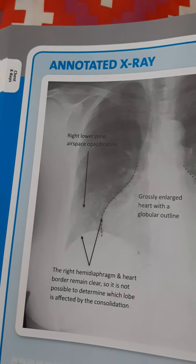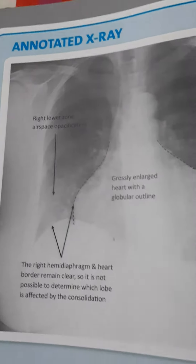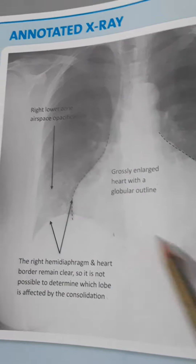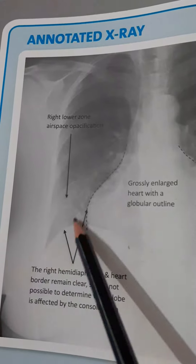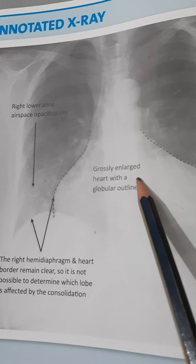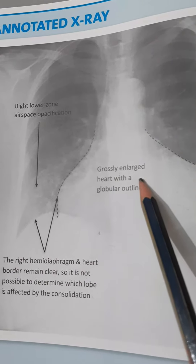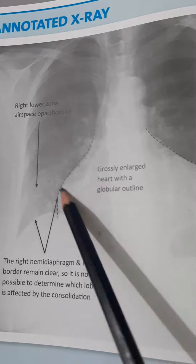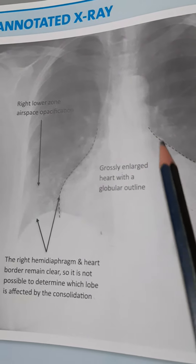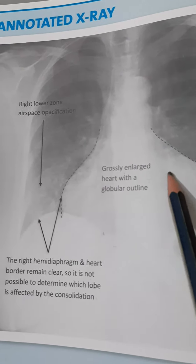The apex of the left lung is cut off. The most striking abnormality is an enlarged heart, which has a globular appearance suggestive of pericardial effusion.